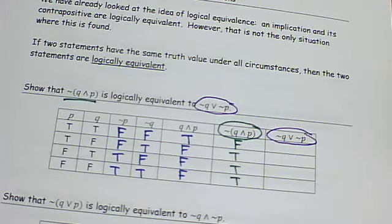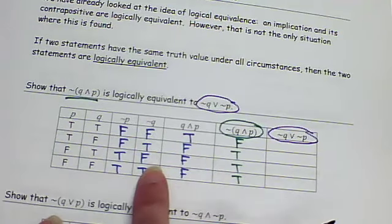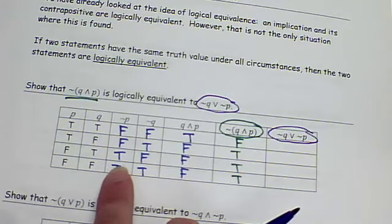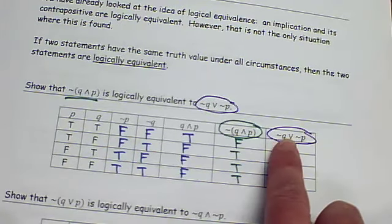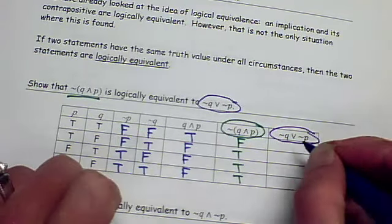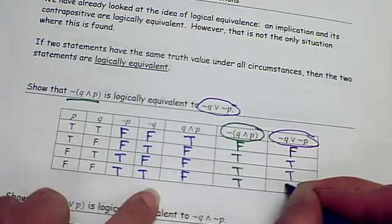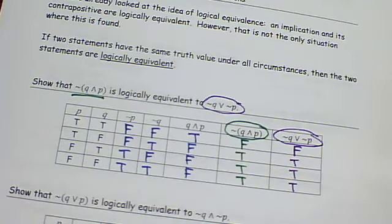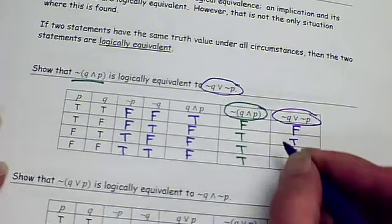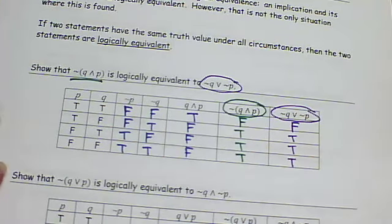Now the last one, we're supposed to say not Q, which is here, or not P, here. Now this is a regular OR, so that's either or both. False, false. We have at least one true here, one true here, one true here, and both are true. Are these logically equivalent? Yes, they are.